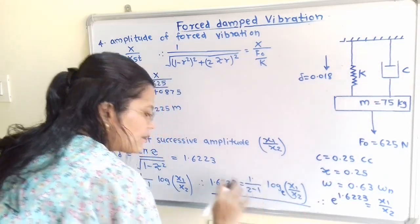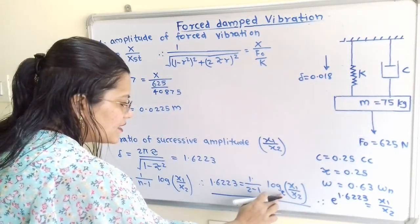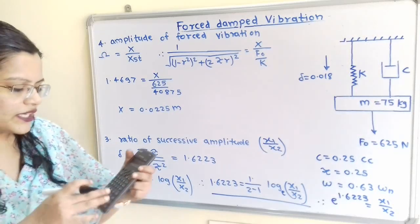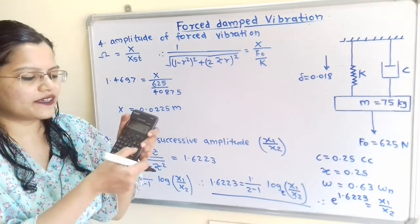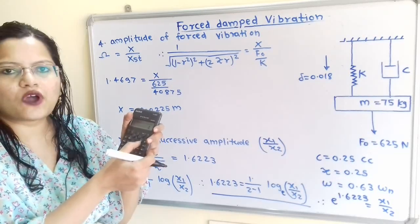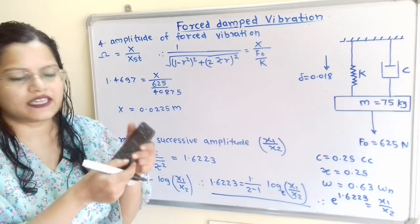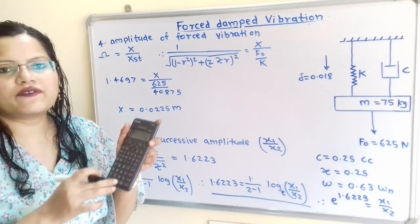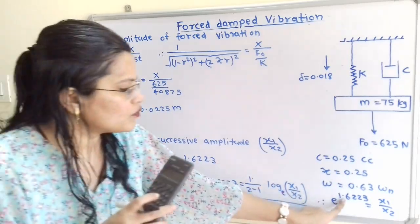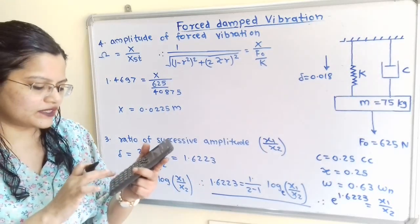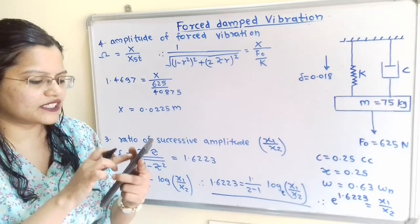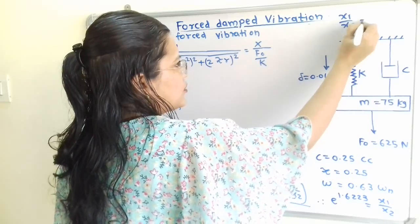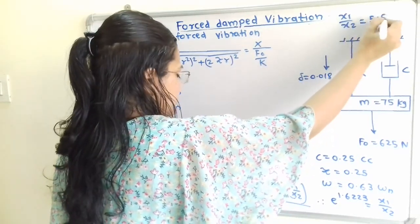Putting δ = 1.6223: ln(x₁/x₂) = 1.6223, so x₁/x₂ = e^1.6223. Using the calculator (shift + ln to get e^x): e^1.6223 = 5.0647. Therefore the ratio of successive amplitudes x₁/x₂ = 5.0647.